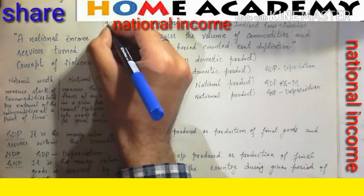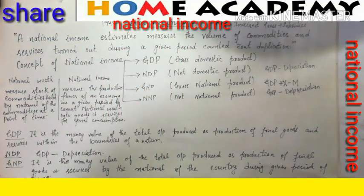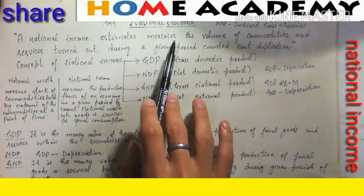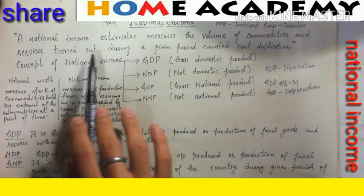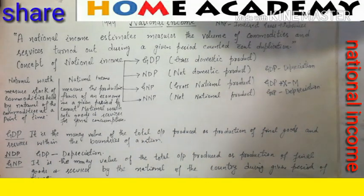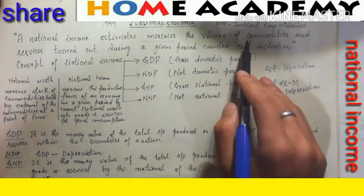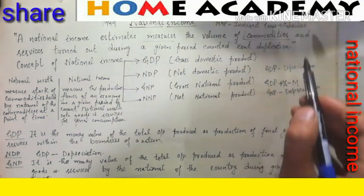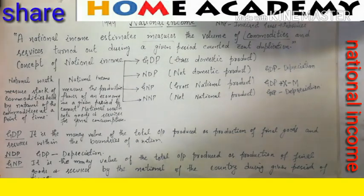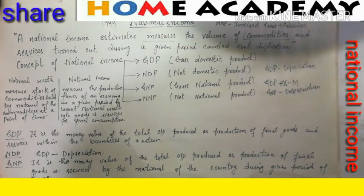A National Income Committee was formed in 1949. This committee defined national income as: 'National income estimates measure the volume of commodities and services turned out during a given period, counted without duplication.' Commodities include everything from the smallest to the largest product, and economics also treats services as goods.